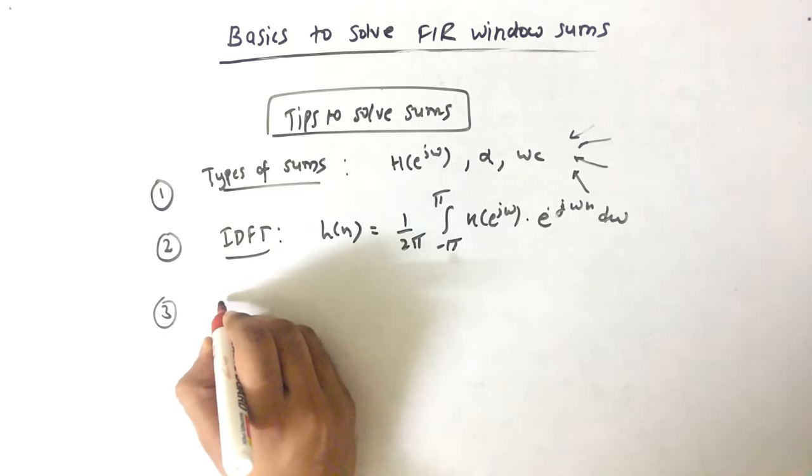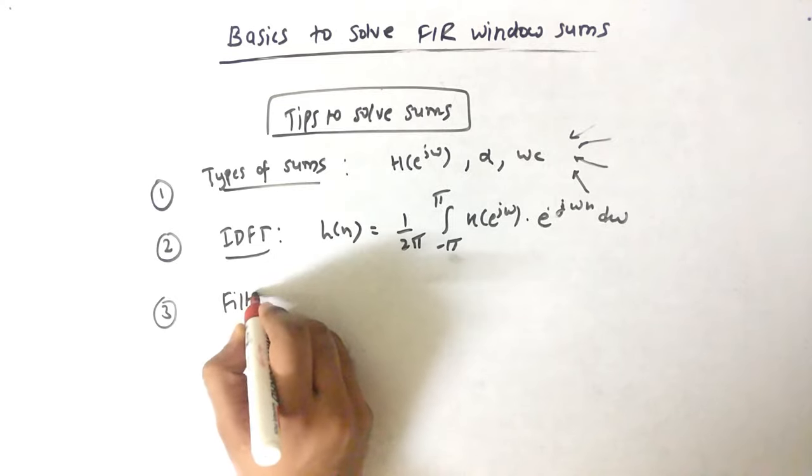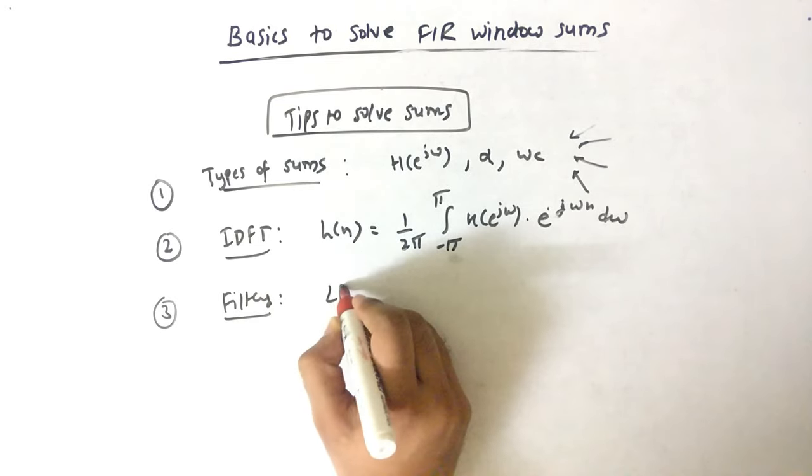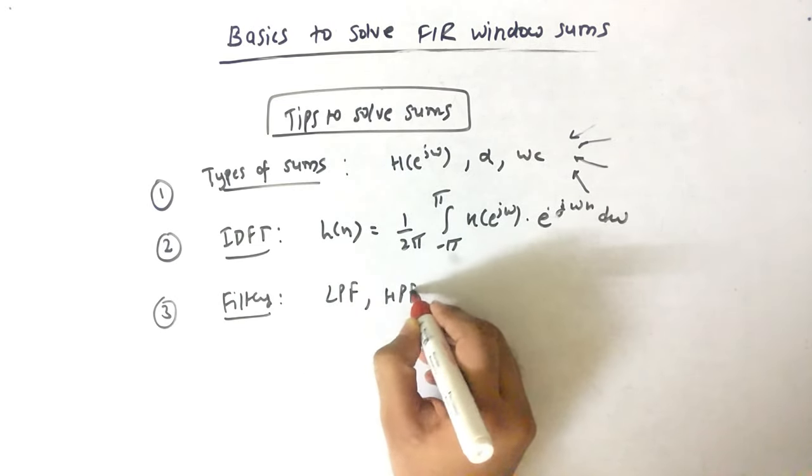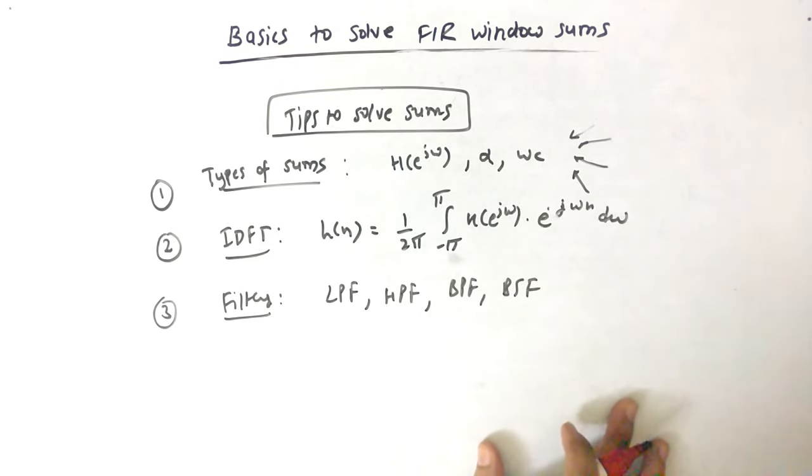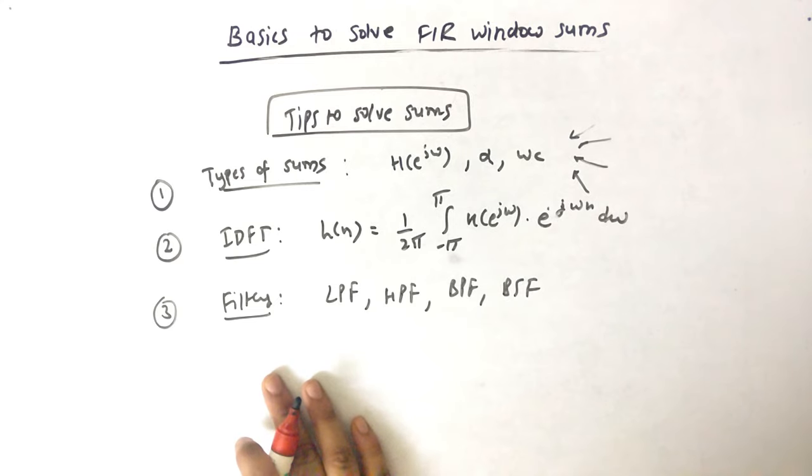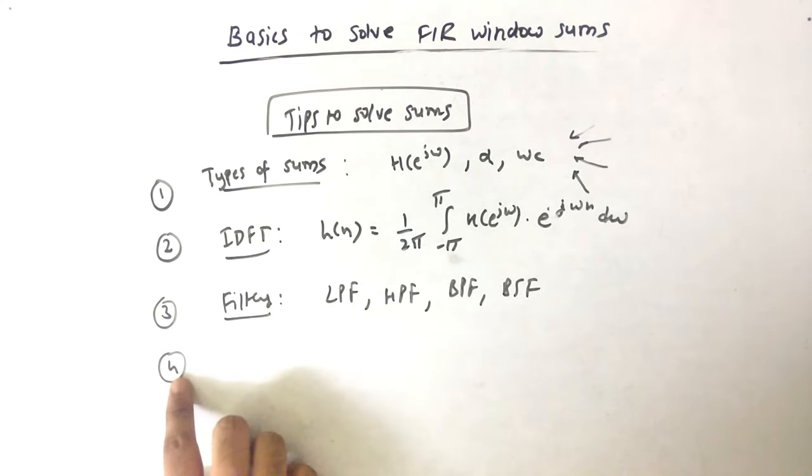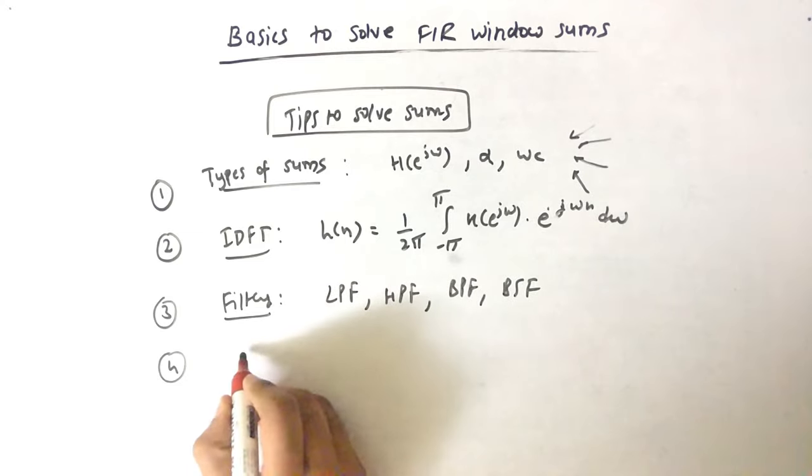What are the types of filters? Filter types are low pass filter, high pass filter, band pass filter, and band stop filter. These 4 are the types of filters.